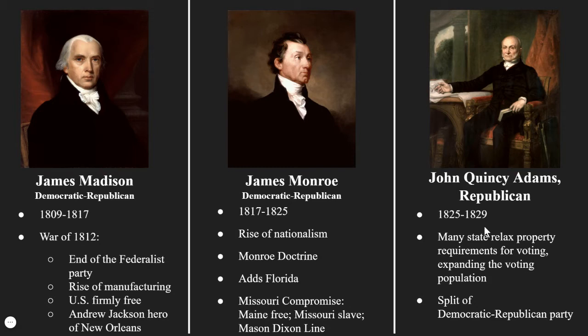John Quincy Adams is the first president we would label as a Republican — but again, this is not a Republican in terms of what it means today. He is president from 1825 to 1829. Under Adams, many states relaxed their property requirements for voting, expanding who gets to vote. This was not popular with wealthy landowners. The vote is power, and if you take away the property requirement, these poor, landless men are now getting to vote. It ends up splitting the Democratic-Republican party of the time.